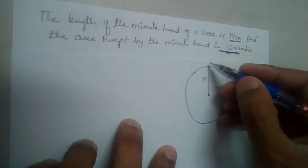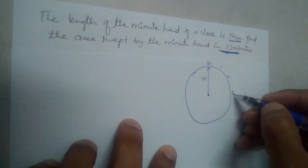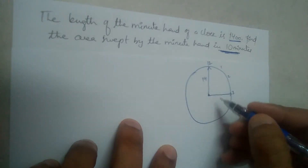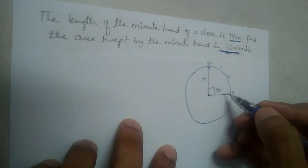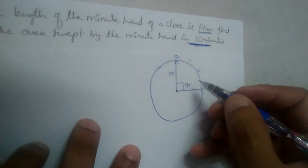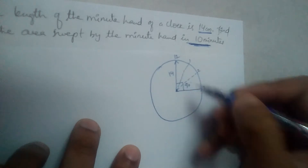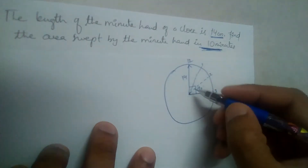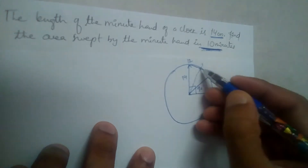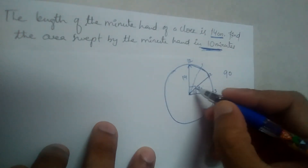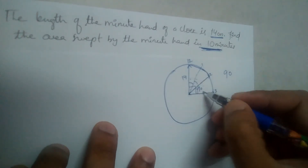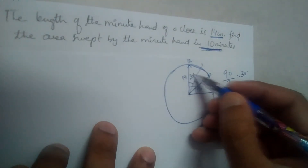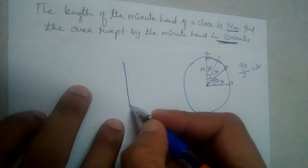Let's say this is the clock. Positions 12, 1, 2, and 3 are marked. If the minute hand starts at 12 and goes up to 3, it makes 90 degrees — that's one quarter of the circle. Now let's divide this quarter circle into three equal parts. 90 divided by 3 gives us 30 degrees, so each part is 30 degrees.